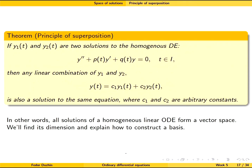Recalling linear algebra: when a linear combination of two objects is again an object of the same nature, it means all these objects form a vector space. Equivalently, we can state this theorem as: the set of solutions of a homogeneous linear differential equation is a vector space.